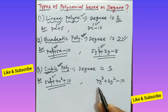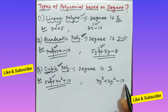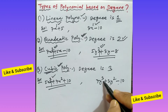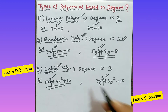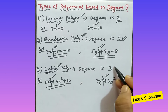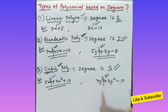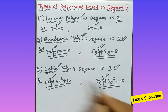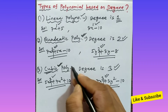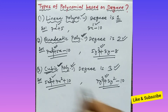Similarly, 7y cubed plus 3y squared minus 10 — in this polynomial, the highest power of the variable is 3, so the degree is 3. As the degree is 3, this polynomial is called as cubic polynomial.